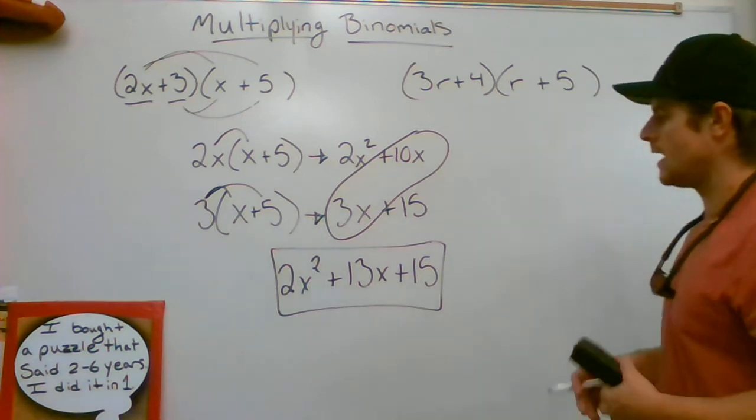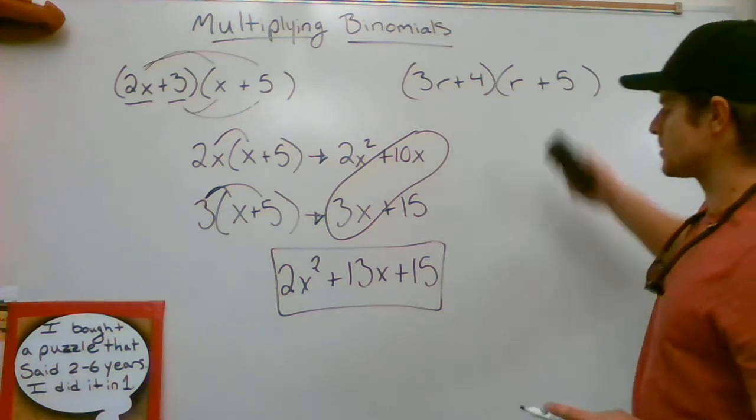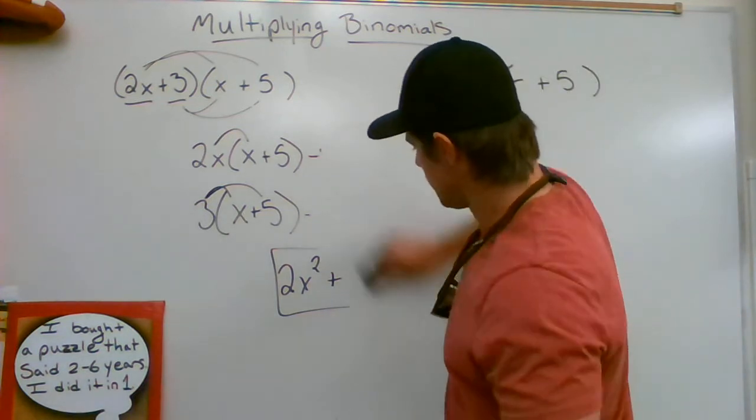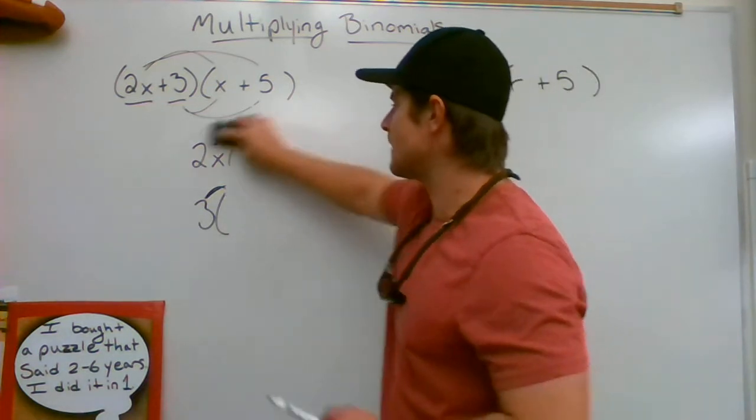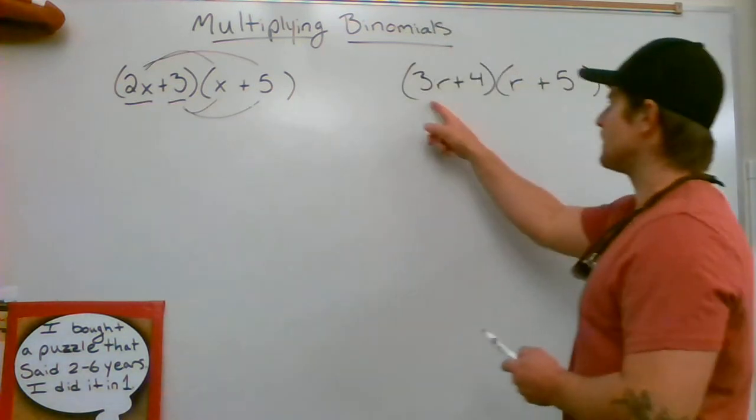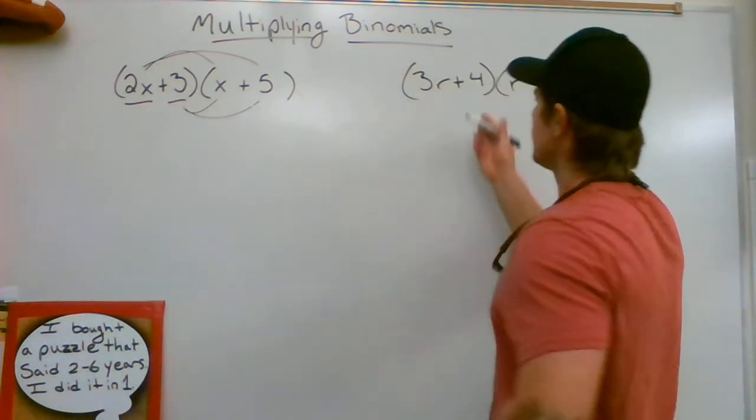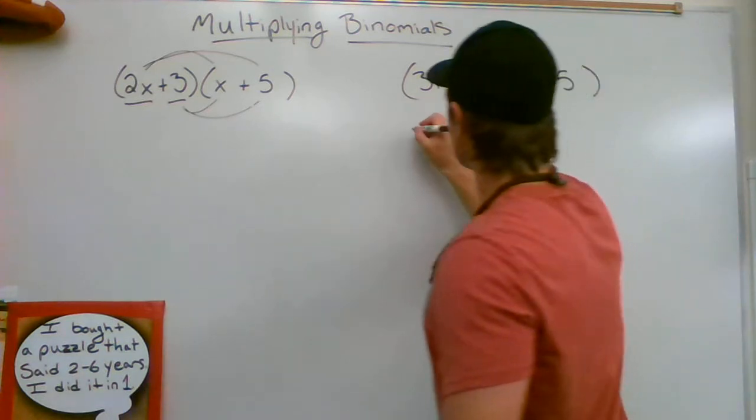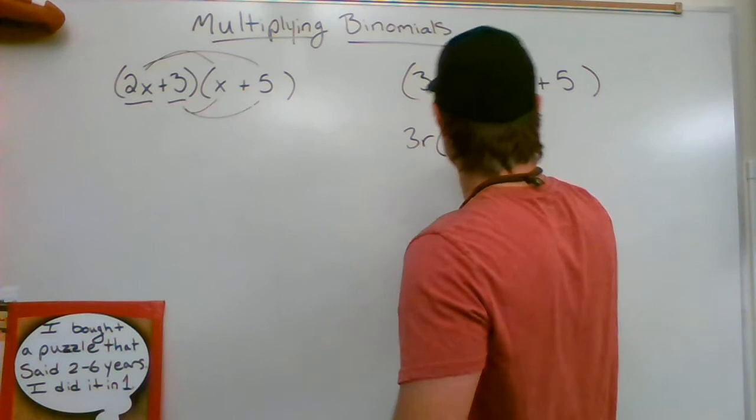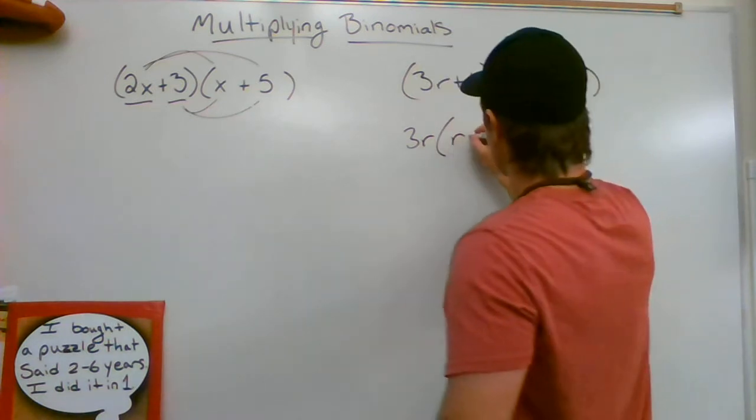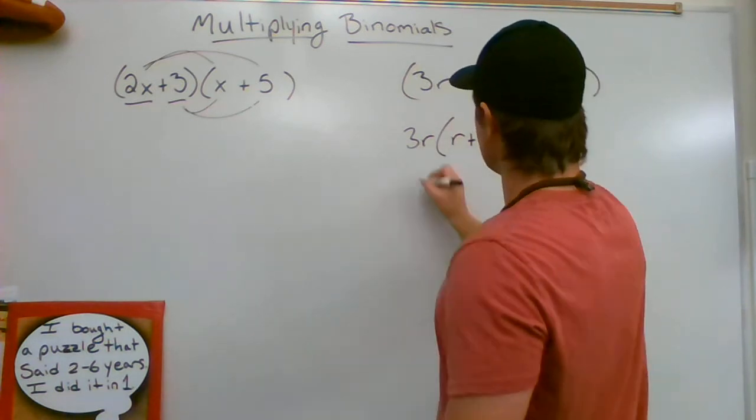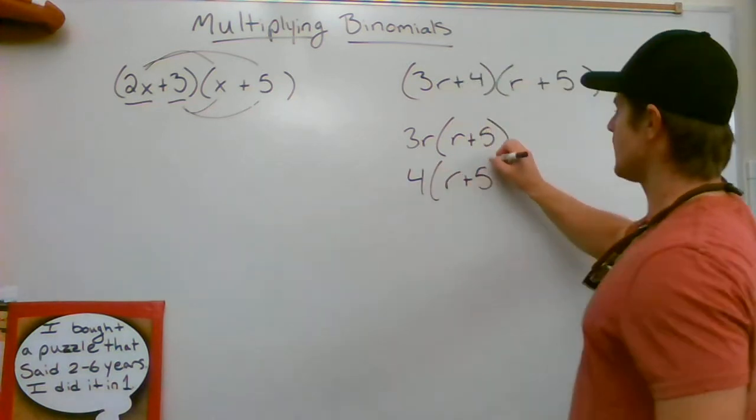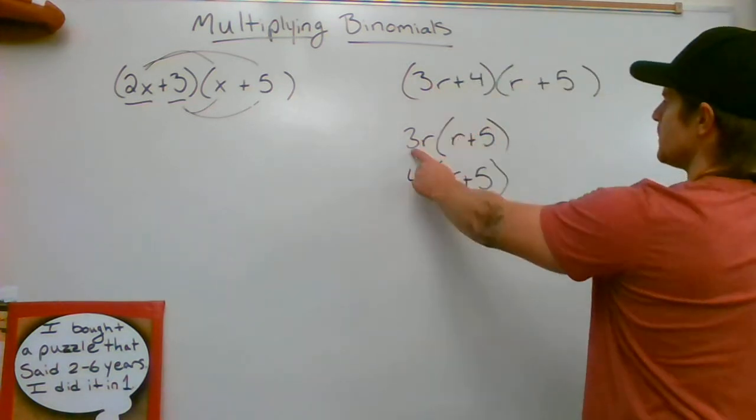Now we have a binomial again being multiplied by another binomial: (3r + 4) times (r + 5). So the first thing I'm going to write out is 3r times (r + 5), and then I'm going to do 4 times (r + 5). Notice I did this term distributed to both parts first, and then the second term distributed to both parts.